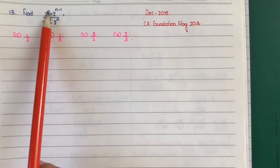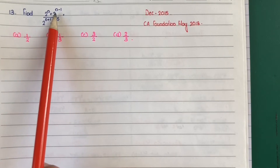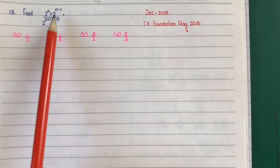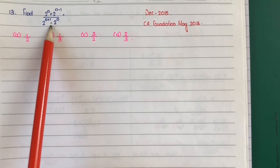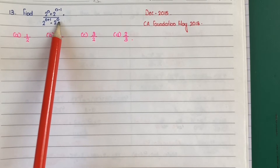Find 2 raise to n plus 2 raise to n minus 1, divided by 2 raise to n plus 1 minus 2 raise to n.